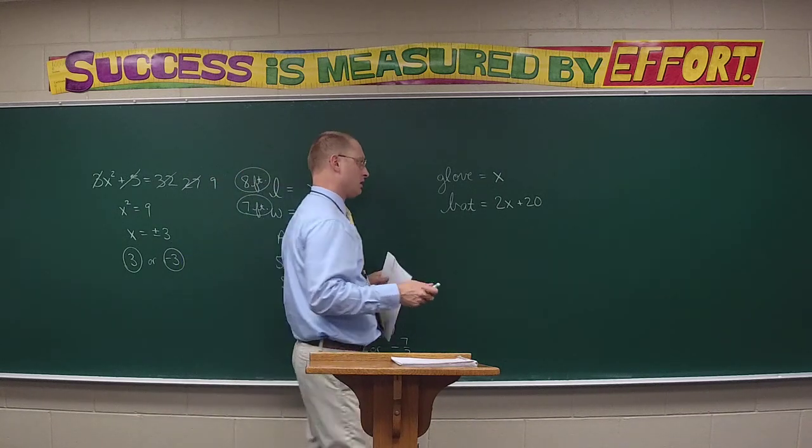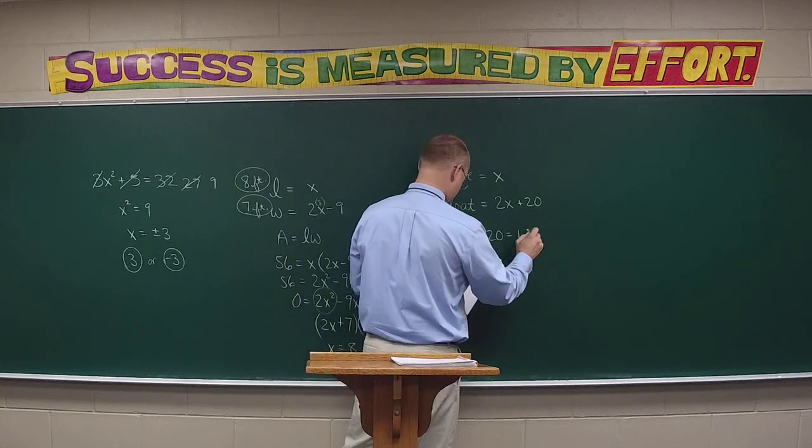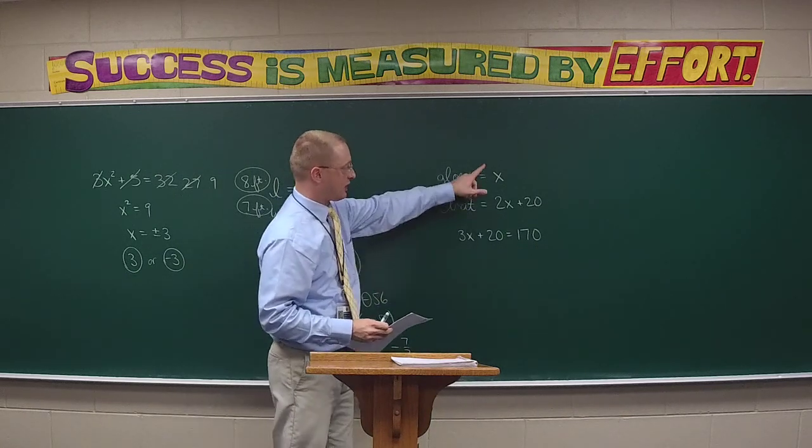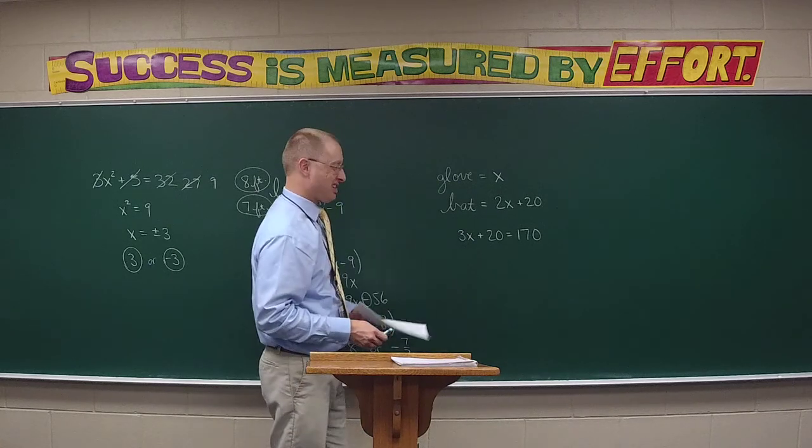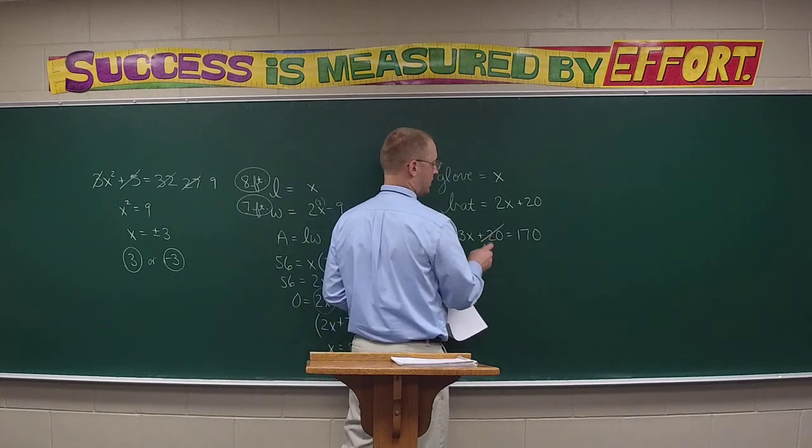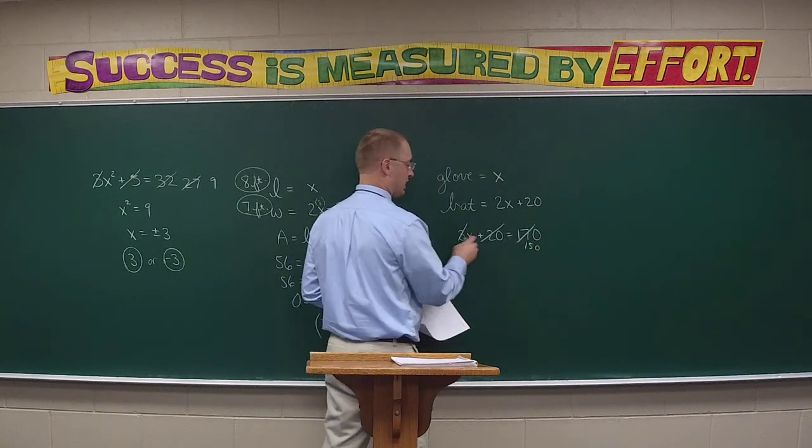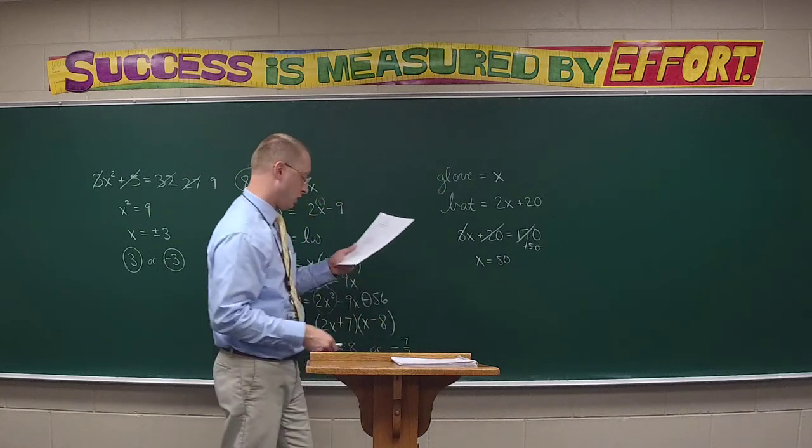It said together sold for $170. What would our equation be? X plus 2x plus 20 equals 170. Combine to get 3x plus 20 equals 170. Then we solve the equation. Move over the 20 as a negative to get 3x equals 150, then divide away the 3 to get x equals 50.